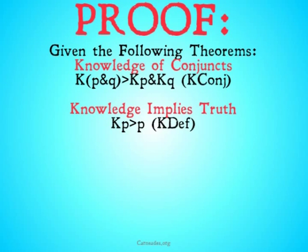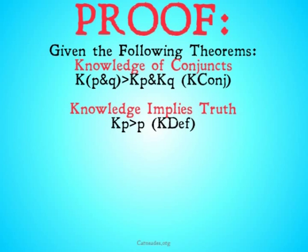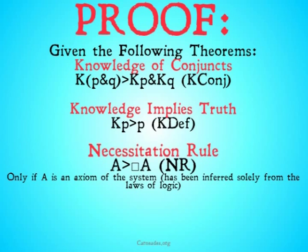We're going to use the following theorems: knowledge of conjuncts, which basically means if you know a conjunction — if you know that P and Q — then you know each of the individual conjuncts: you know that P and you know that Q. That's just an understanding of knowledge. And knowledge implies truth, which is in most definitions of knowledge that I'm aware of: knowing that P implies that P. We'll represent knowledge of conjuncts with K-conjunction and knowledge implies truth with K-def.